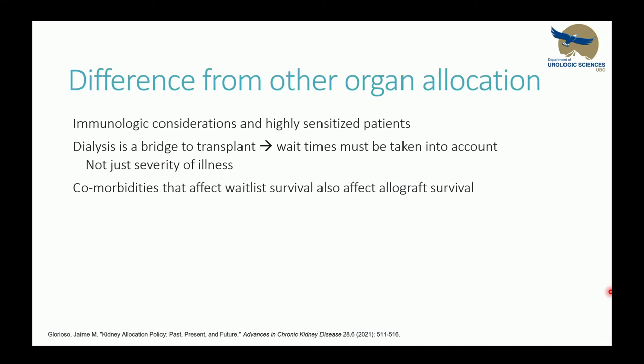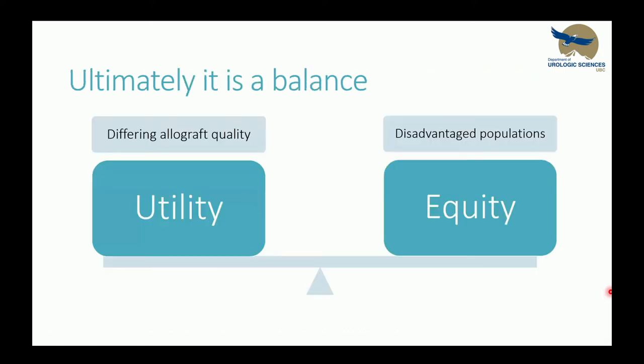Kidney allocation bears some key differences from other organ allocation systems. First, there are immunologic considerations and highly sensitized patients. Second, we have dialysis as a bridge to transplant, so wait times — not just medical urgency — must be considered. Patients with comorbidities that affect waitlist survival will also affect allograft survival. Ultimately, it's a balance between utility — making the best use of differing allograft qualities — and equity — ensuring we're not disadvantaging already underserved populations.